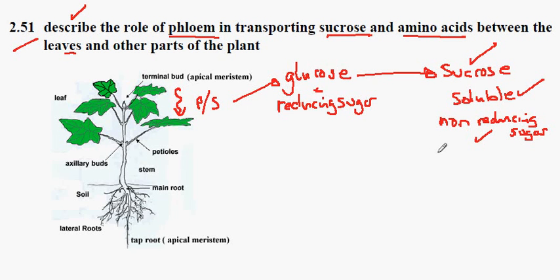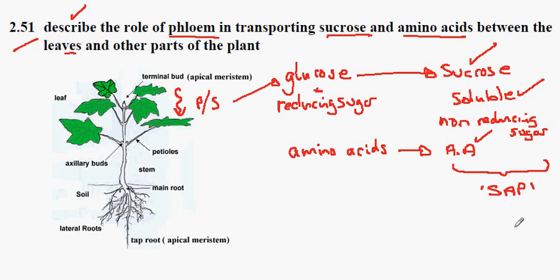The second substance that we should consider is the transportation of amino acids, also synthesized in the leaf. These will be transported together with the sucrose. When transported in a soluble form, they combine to form a substance that we could call sap. And the sap travels through a tissue called the phloem.